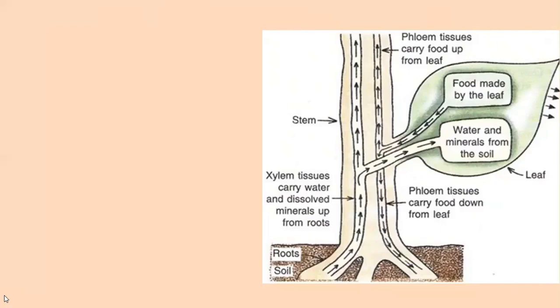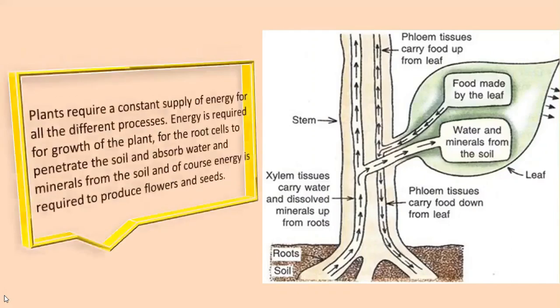In the video on respiration in animals we learned that the food molecule glucose is broken down in each and every cell of the body to release energy. Similarly, plants also need a constant supply of energy for all the different processes that go on inside the cells of the plant body.